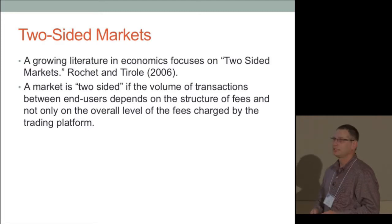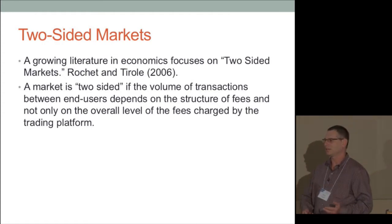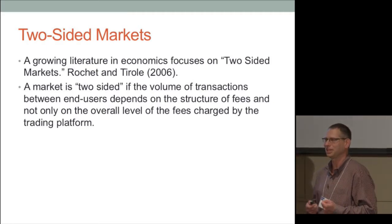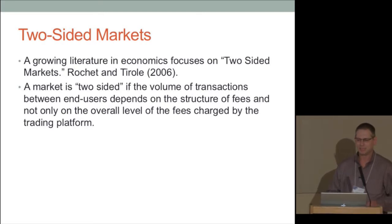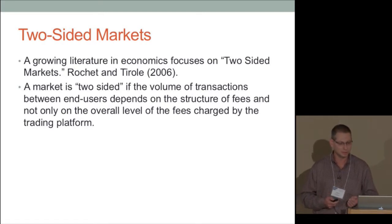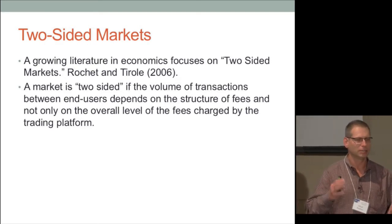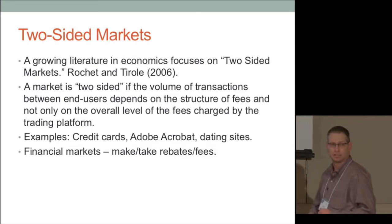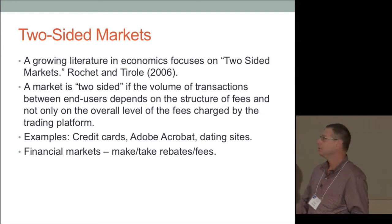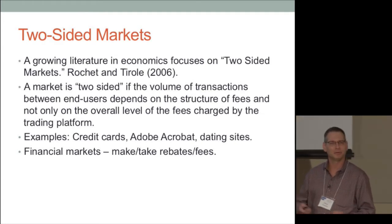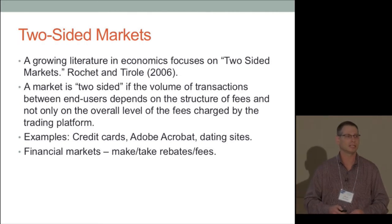The make-take fee structure is related to the idea of two-sided markets. Rochet and Tirole define a two-sided market as one in which the volume of transactions between end users depends on the structure of fees, not only on the overall fee — so the breakdown of fees affects the volume of transactions, not just the total. Examples include credit cards, Adobe Acrobat — do you charge those who create documents or those who read them — dating sites charging different fees to men and women. Financial markets are also a two-sided market.